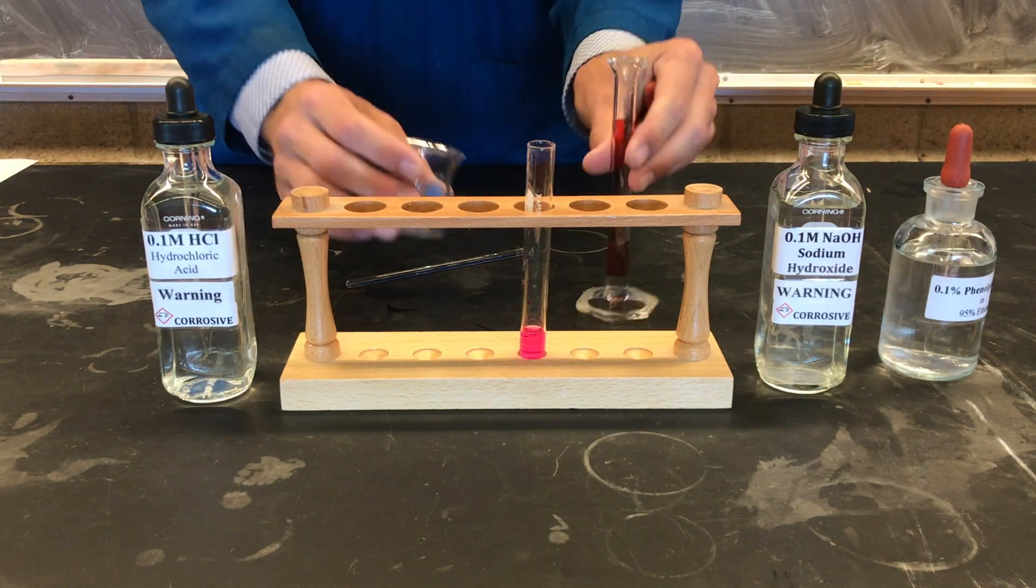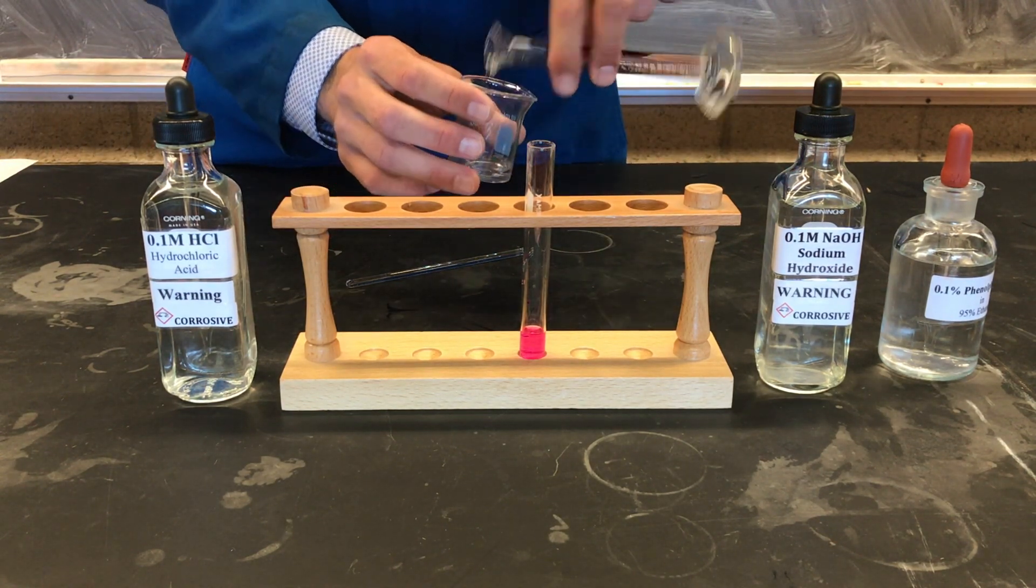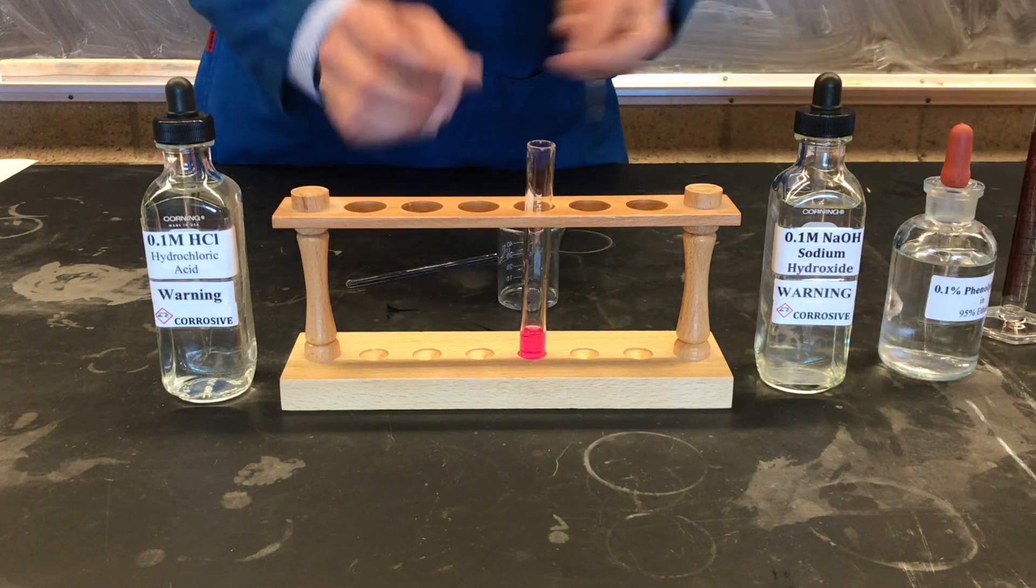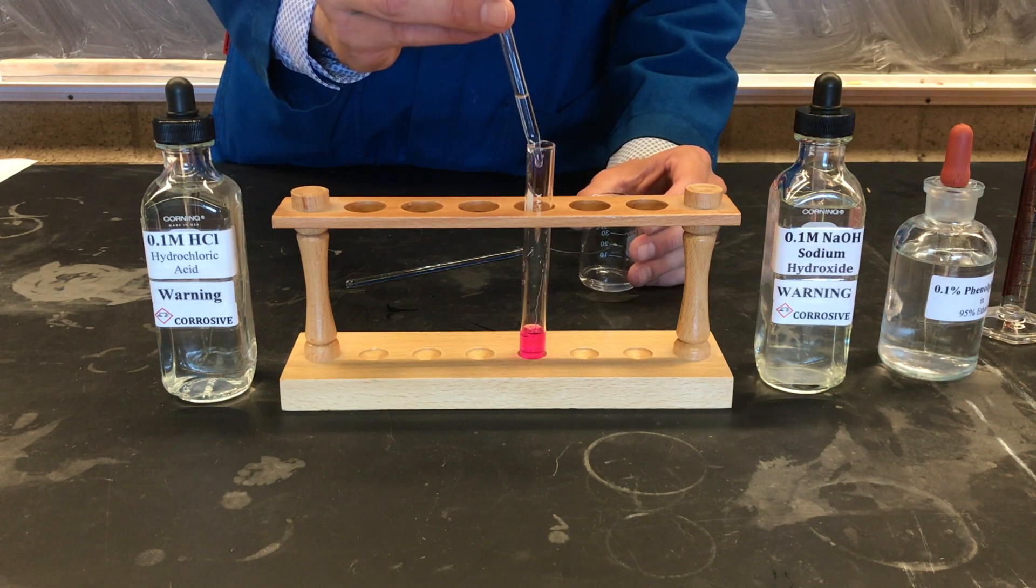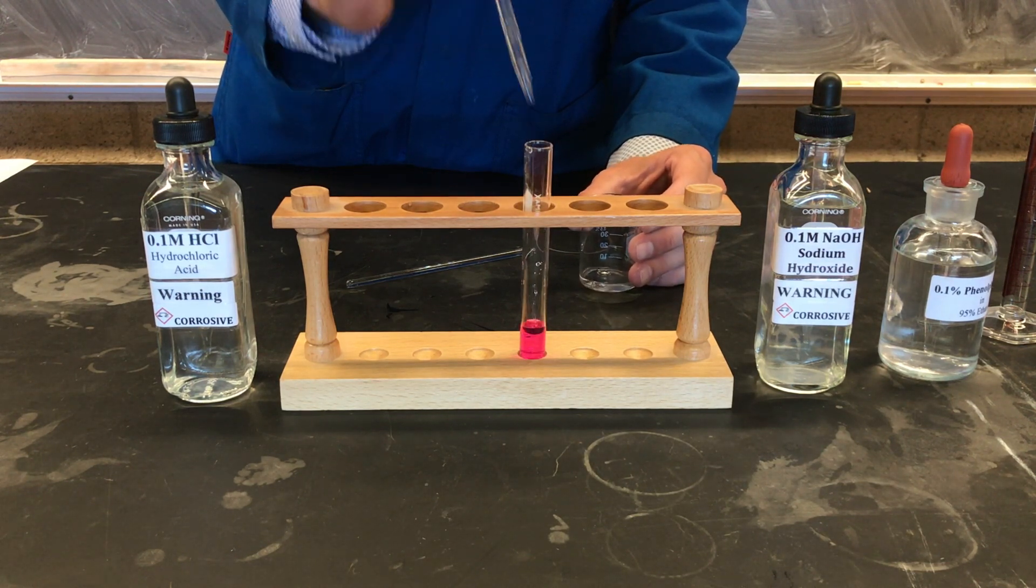Sometimes in experiments you have to adapt, so we'll transfer our solution to a 50 ml beaker and add then our hydrochloric acid solution to our test tube containing sodium hydroxide dropwise.